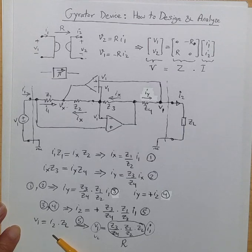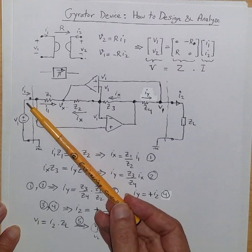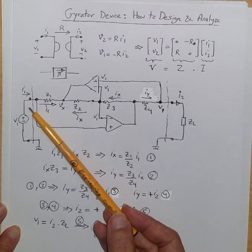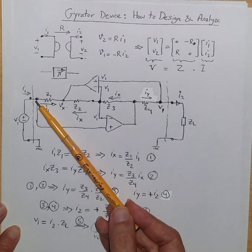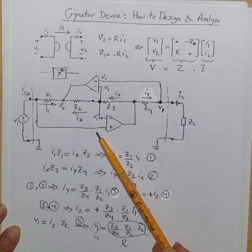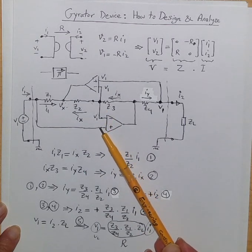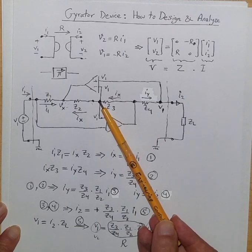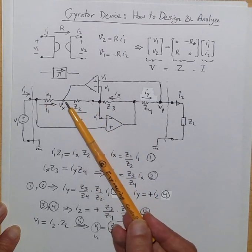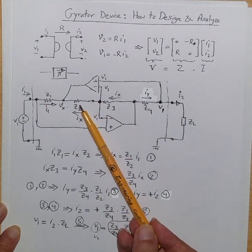But we still don't know the relationship between V1 and I1. To find that we know that this port is V1, the voltage here is also V1 because of the virtual short property. Now you can see that the voltage here is V1, here is V1, this voltage Vx is common between these two impedances.